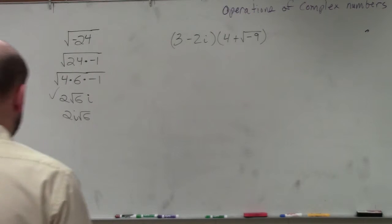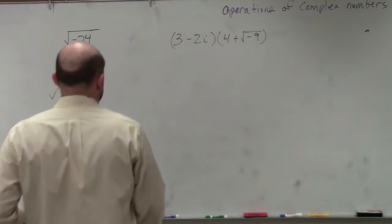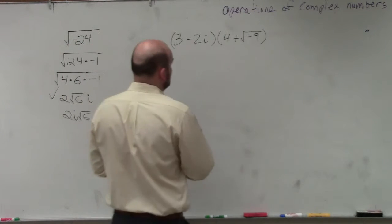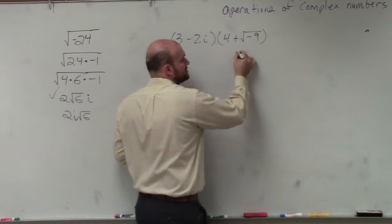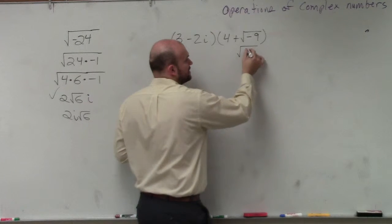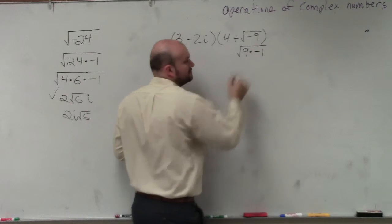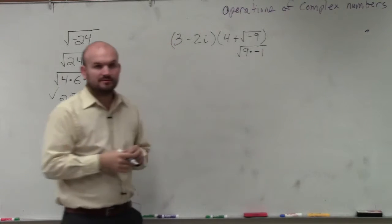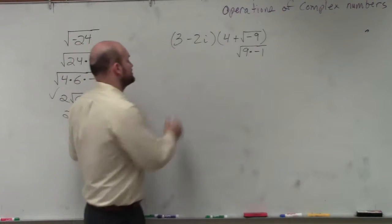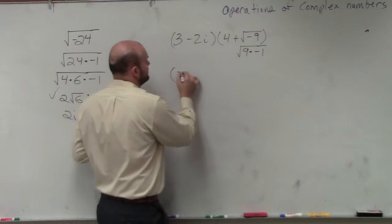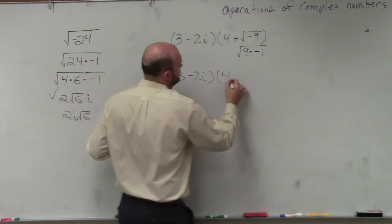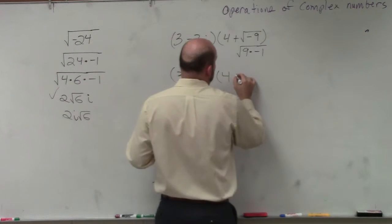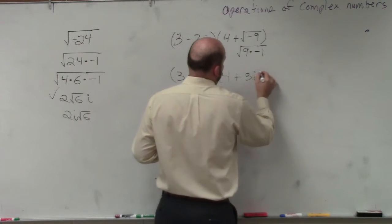The first thing I would do is make sure that I understand that the square root of a negative number can be written as 9 times negative 1. So I can actually rewrite this problem as 3 minus 2i times 4 plus 3i.